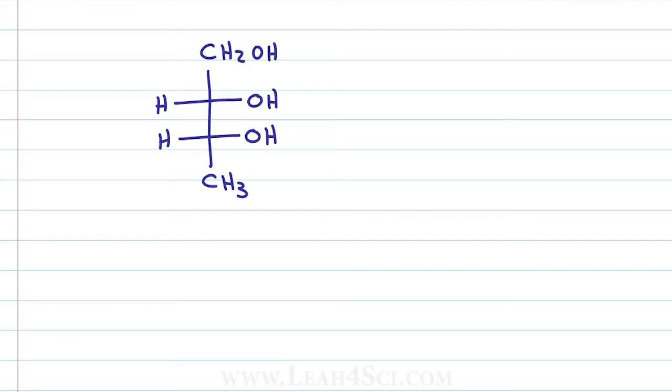Once again, we want to draw the enantiomer, this time looking at a Fisher projection. If you haven't studied Fisher's, ignore this and jump to the next problem, otherwise take a look and think about what you want to do. With Fisher projections, it's just as easy to draw a mirror or to do a swap but remember, if you're doing a swap, we have two chiral centers so we have to make sure to swap both giving us the enantiomer rather than a diastereomer.